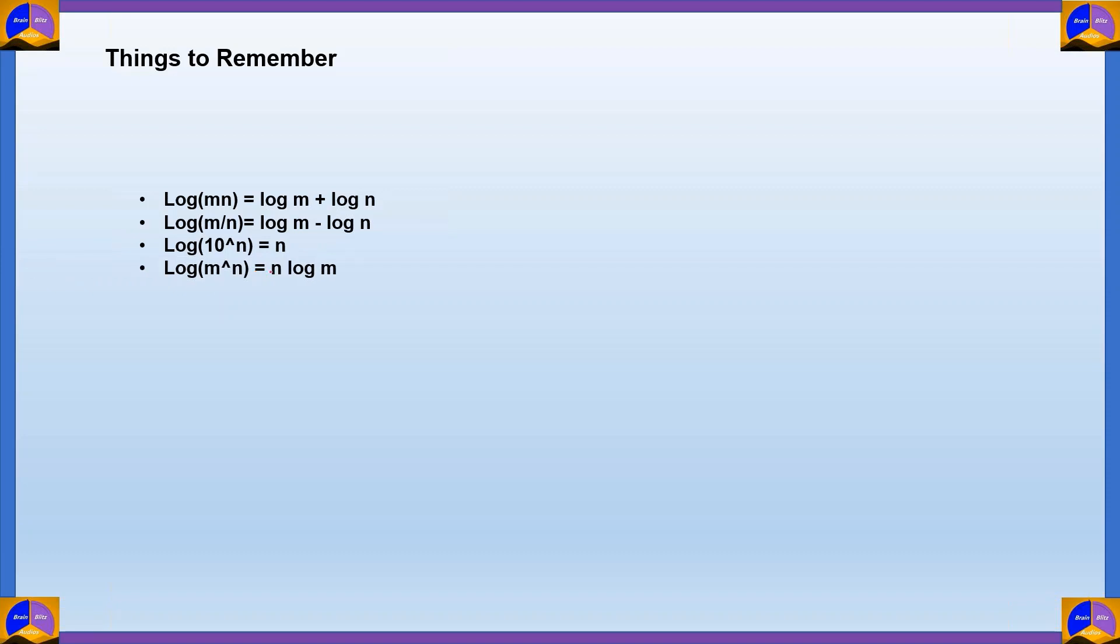Log M raised to n is equal to n log M. Since log 10 is equal to 1, this is actually n log 10, which becomes n into 1. And then we have the value of log 1 as 0. This stays the same always. And log 0, we cannot define it because anything raised to 0 is not defined. And then finally, we have the value of log 10 as 1. These are the general rules of logarithm.